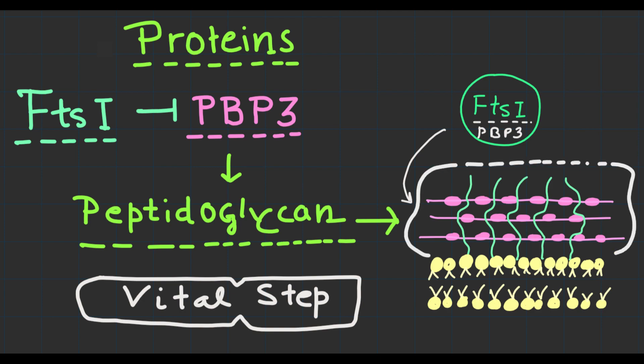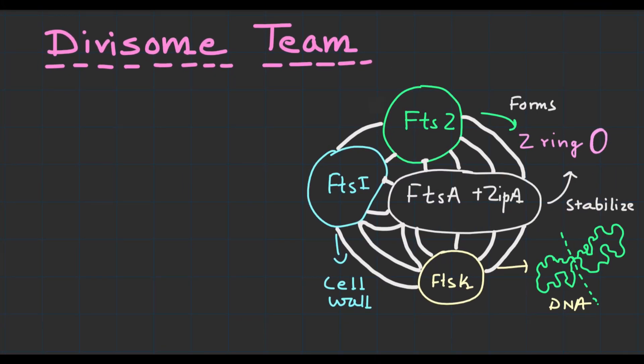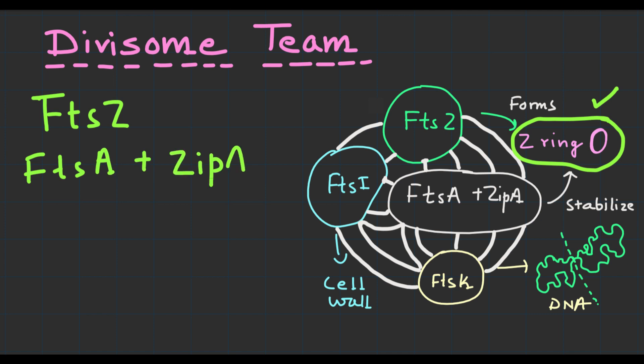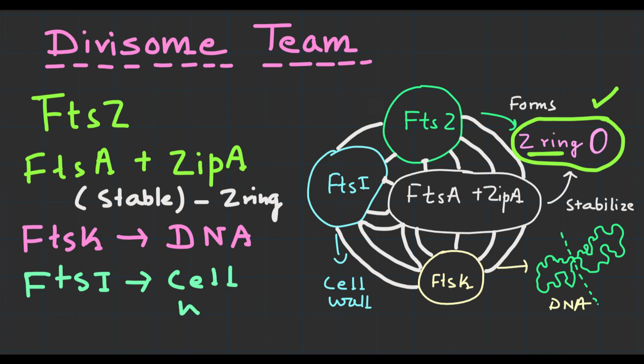The divisome core complex works as a synchronized team with each protein playing a specific role. FtsZ assembles the Z ring, FtsA and ZipA stabilize it, FtsK segregates the DNA, and FtsI or PBP3 builds the new cell wall. Together they ensure accurate and efficient cell division.